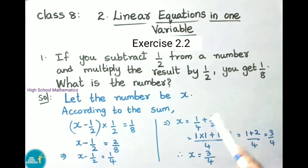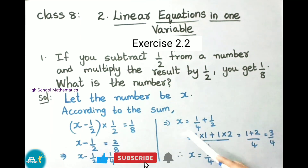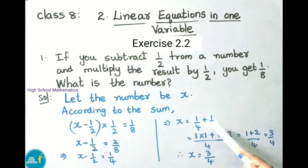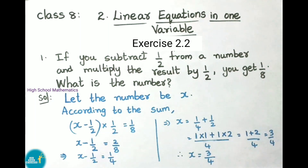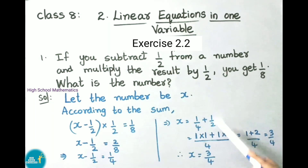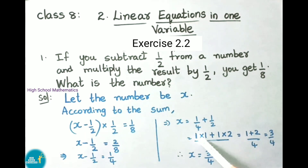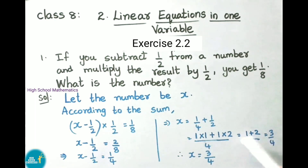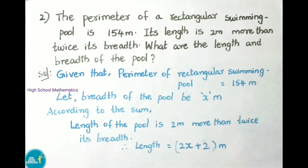In the next step, x equals minus 1/2; on transposing it becomes plus 1/2. So x equals 1/4 plus 1/2. After finding the LCM of 4 and 2, the LCM value is 4. Taking the numerator: 1 times 1 plus 1 times 2, that is 1 plus 2 equals 3, with denominator 4. Therefore x equals 3/4.